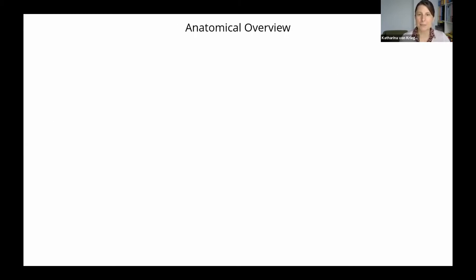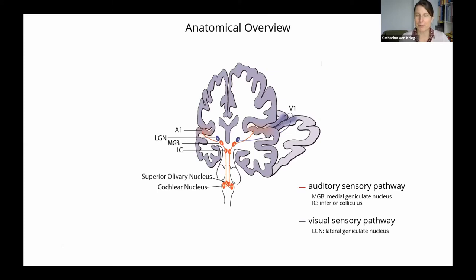But before I start with the experiments, just a very quick overview of the sensory pathways in the auditory and vision modality. I will be talking about the MGB, the auditory thalamus, the inferior colliculus, the auditory midbrain, and I also briefly mentioned the visual thalamus, the LGN.